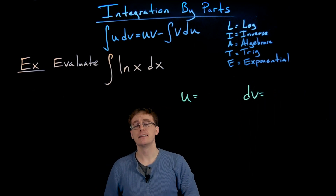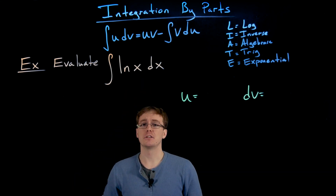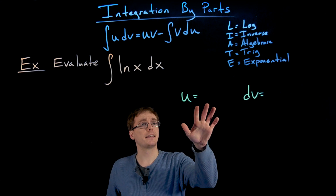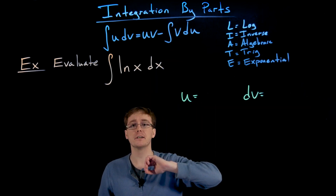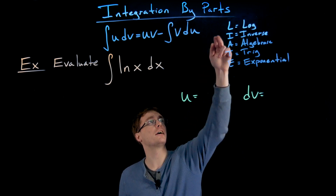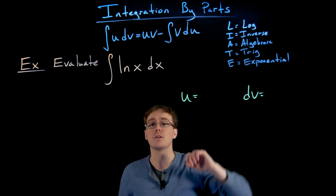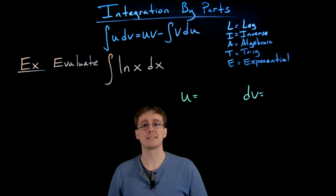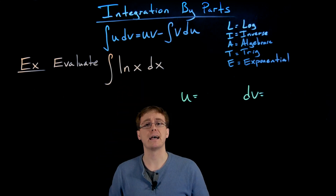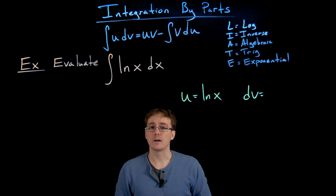Remember, our acronym LIATE can help us identify u. Our integrand is just a single function — the natural log of x — so let's go down the hierarchy. At the top are logarithmic functions, and we always set u equal to a logarithmic function if we have one as a factor in our integrand. That's exactly what we have here, so u equals the natural log of x.